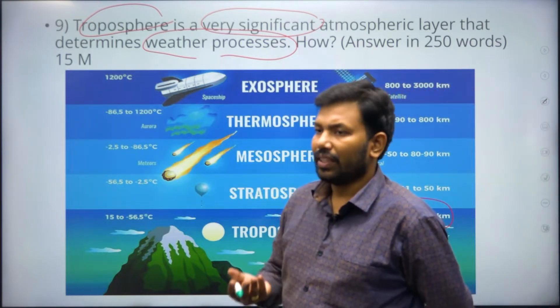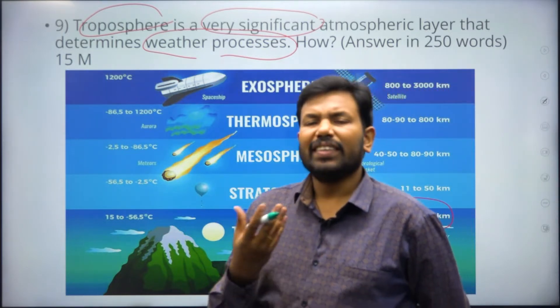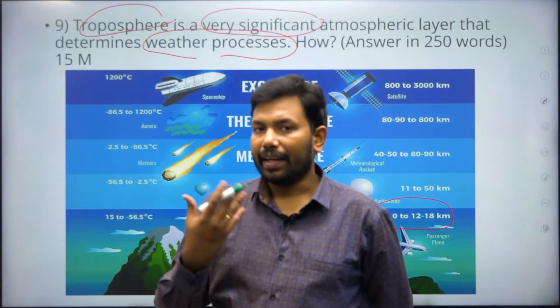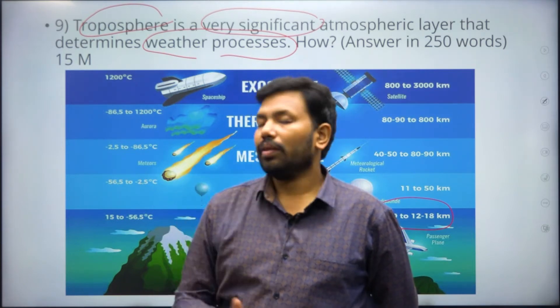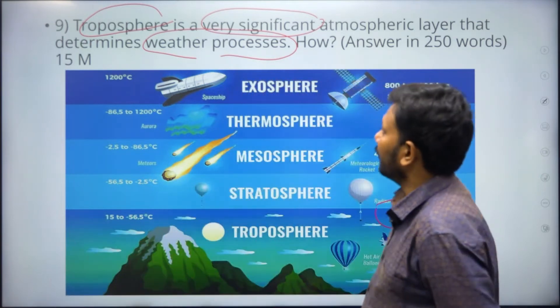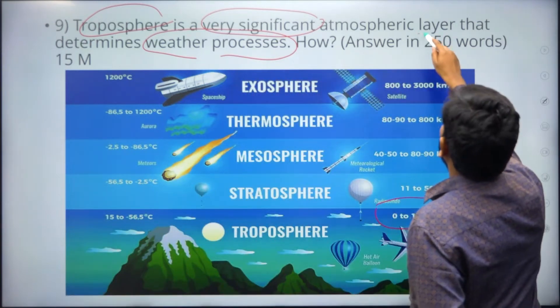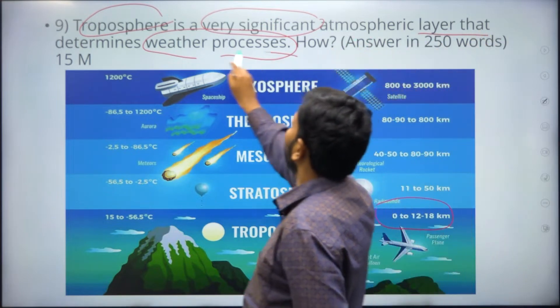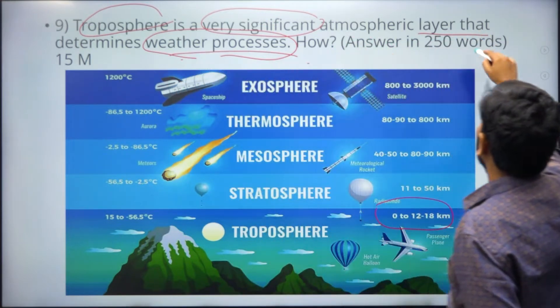You can write about significance - life starts here, agriculture starts here, biota, vegetation, all the good and bad things start here. But the key point is atmospheric layer that determines weather patterns. You have to concentrate on how to prove it.